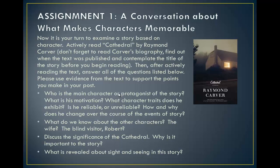First, tell us who is the main character or protagonist of the story — the person most affected by the conflict who changes over the course of the story. What is his motivation? Why does he change, and what character traits does he exhibit? Is he reliable or unreliable? How and why does he change over the course of the events of the story? What do we know about the other characters — the wife, the blind visitor Robert? Discuss the significance of the cathedral that appears at the end of the story. What is the significance of that, and why is it important? And finally, think about this: what is revealed about sight and seeing in the story?